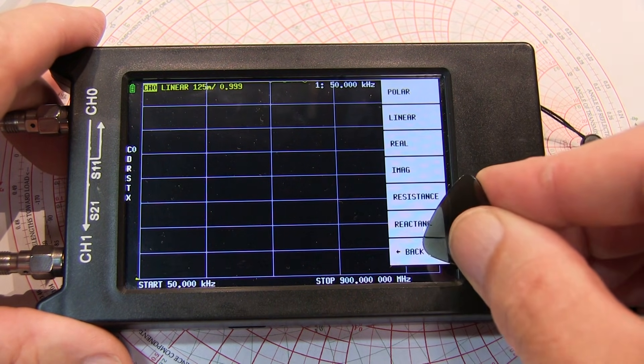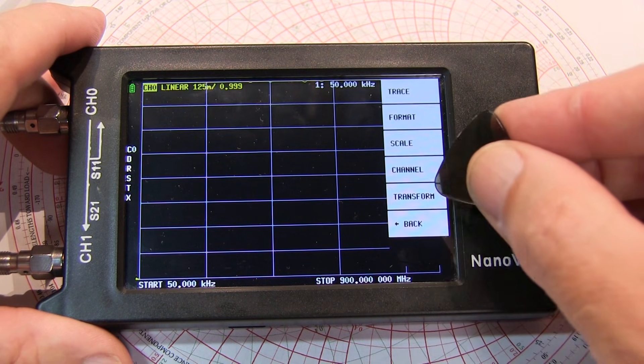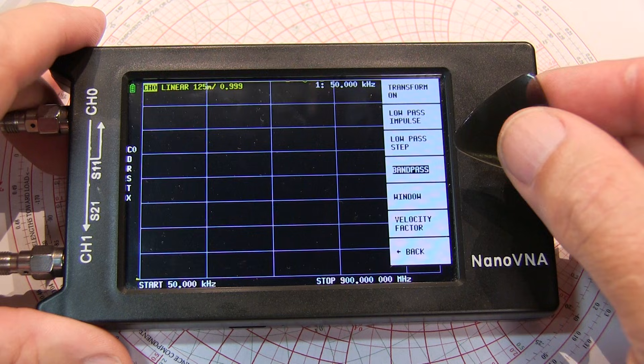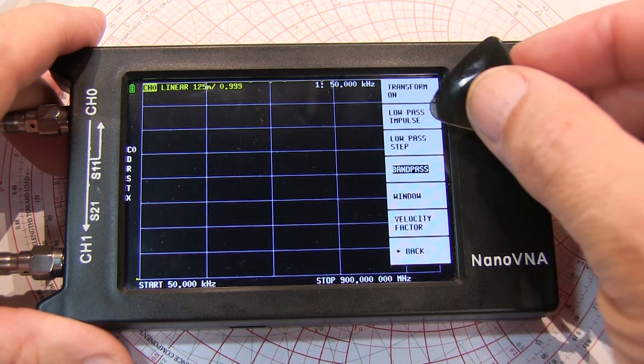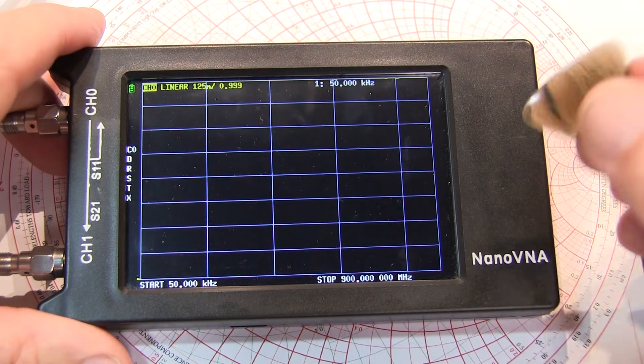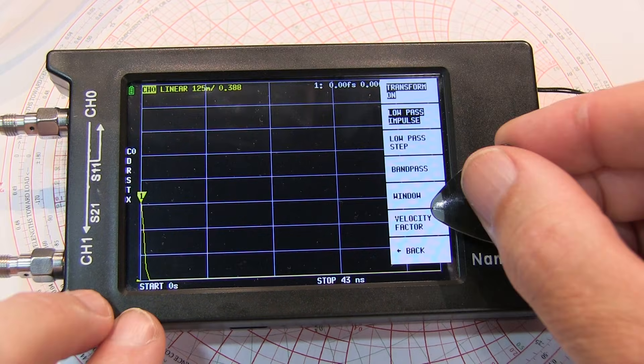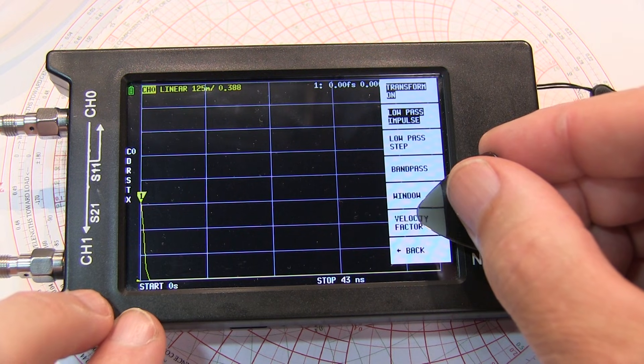We'll then need to set up the transform, so we'll go back and go to transform. To measure the length of coax, we're going to use the low-pass impulse response for the transform, and then turn the transform on. Next, we want to select the velocity factor for the coax.